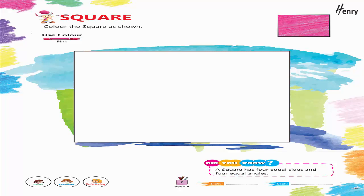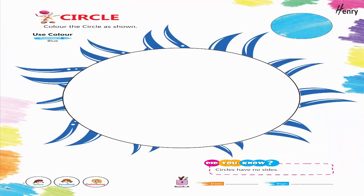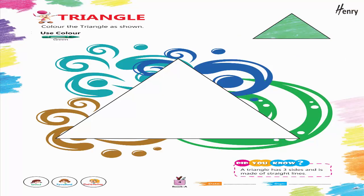Square. Color the square as shown. Use color pink. Did you know a square has four equal sides and four equal angles? Circle. Color the circle as shown. Use color blue. Did you know circles have no sides?